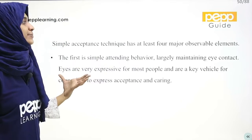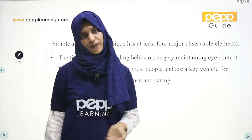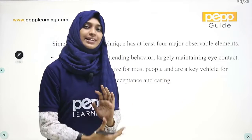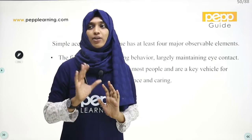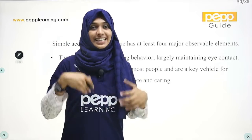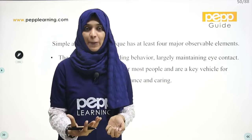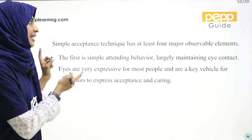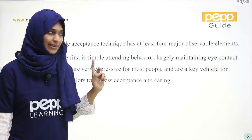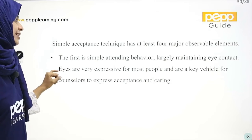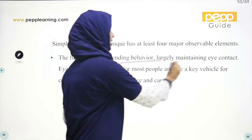Simple acceptance has at least four major observable elements. The first element is simple attending behaviour — largely maintaining eye contact. As a counsellor, when the client speaks, you attend carefully and maintain eye contact.